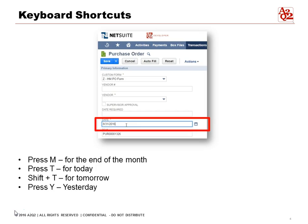Now let's say we're in the process of filling out a purchase order and instead of using the calendar to select the time and dates, what we can actually do in the date field is press M for end of the month, T for today, Shift+T for tomorrow, and Y for yesterday. So just one keystroke rather than having to go to the calendar and select specific dates.